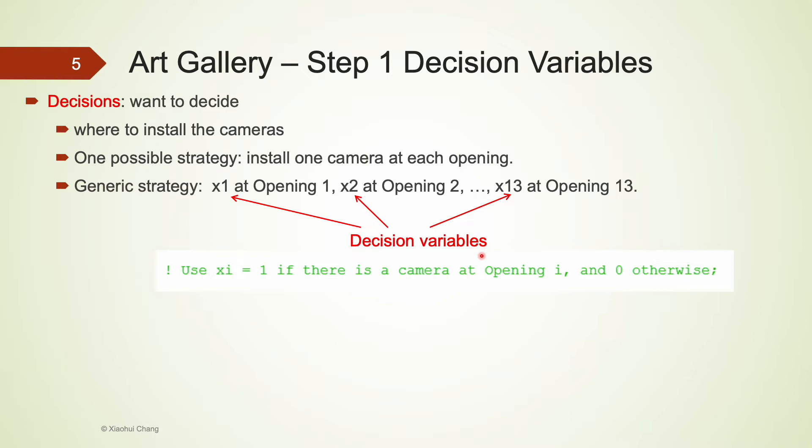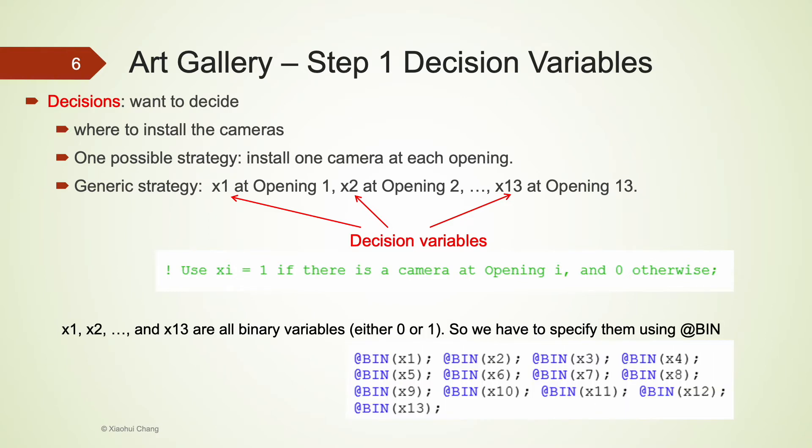Here, I used xi to represent the binary variable at opening i. So we will have x1, x2, x3, so on and so forth until x13. Each of the xi is 1 if there is a camera installed, or 0 otherwise. Because these xi are binary variables, we would have to specify them in LINGO by using @BIN. Be sure to end each line with a semicolon.